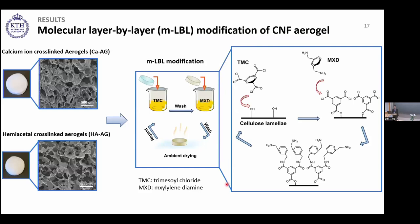Both aerogels had an open porous structure, which is useful for our application. In the next step, we modified these aerogels with three bilayers of molecular layer-by-layer (MLBL) modification using trimesoyl chloride (TMC) and ethylenediamine. By soaking the aerogels in TMC, the acid chloride units reacted with cellulose; then by soaking in ethylenediamine, the amine group reacted with the acid chloride units. By continuing this step-by-step reaction, we formed a polyamide layer on the cellulose structure, with good control over the extent of reaction and surface functionality.